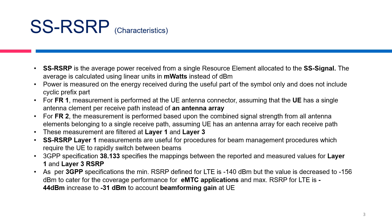In this slide, we have captured some of the key pointers for SS-RSRP. SS-RSRP is an average of power received from a single resource element allocated to the SS signal. This averaging is done by calculating the linear power in milliwatts instead of doing the average in dBm.